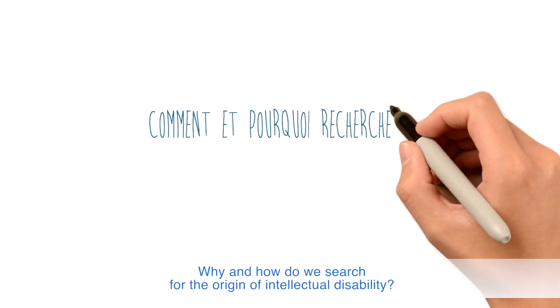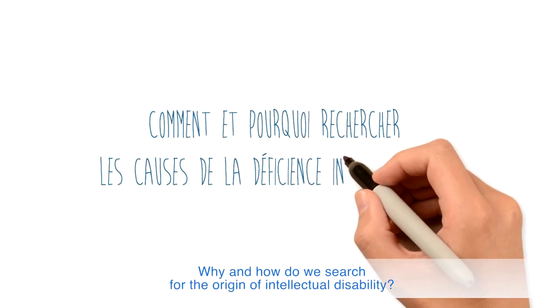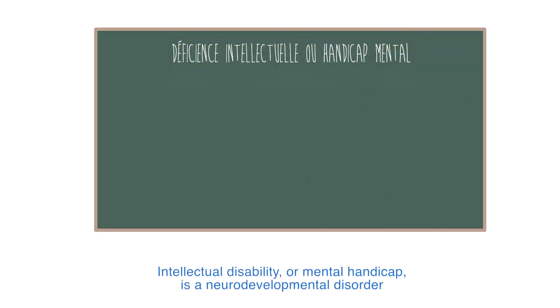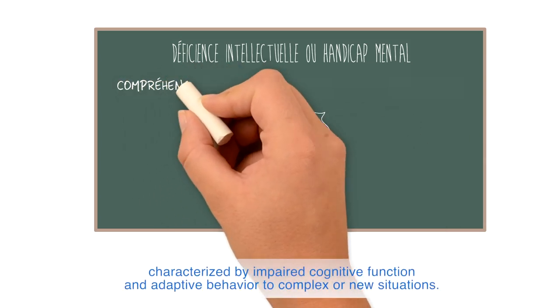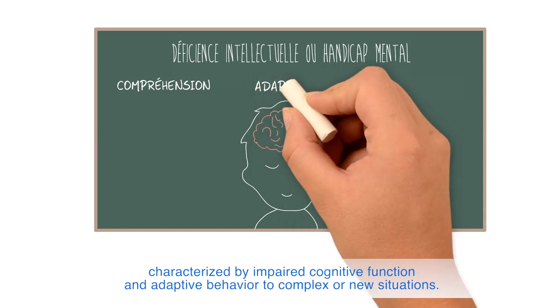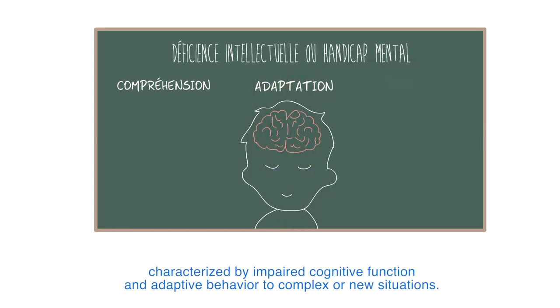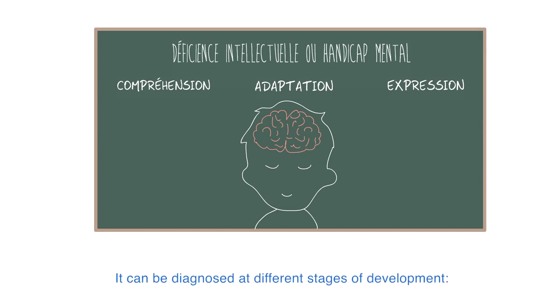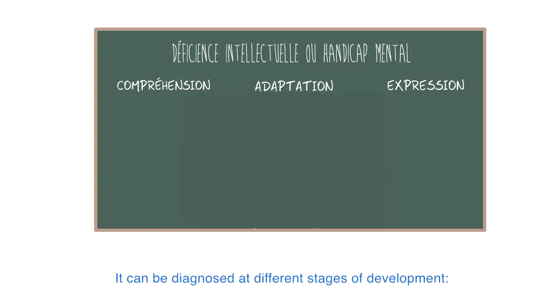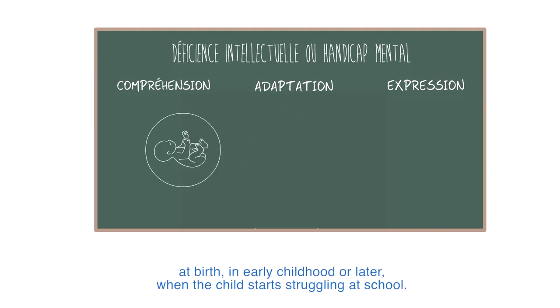Why and how do we search for the origin of intellectual disability? Intellectual disability, or mental handicap, is a neurodevelopmental disorder characterized by impaired cognitive function and adaptive behavior to complex or new situations. It affects language and logical reasoning over a continuum of severity, ranging from mild to severe. It can be diagnosed at different stages of development — at birth, in early childhood, or later when the child starts struggling at school.